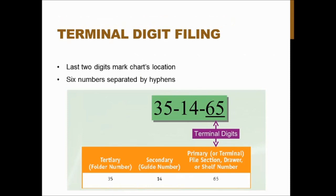Terminal digit filing uses the last two digits of a number to mark the chart's location. It's a six-digit number separated in pairs by hyphens, and you file according to the last two digits. If multiple charts end in the same last two digits, you go to the middle two digits as the secondary number. If those also match, you refer to the first two digits — the tertiary number. No two numbers will be the same in all six digits.